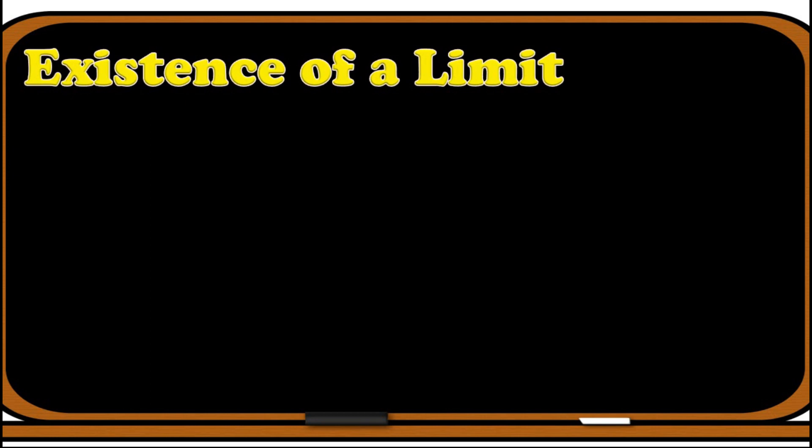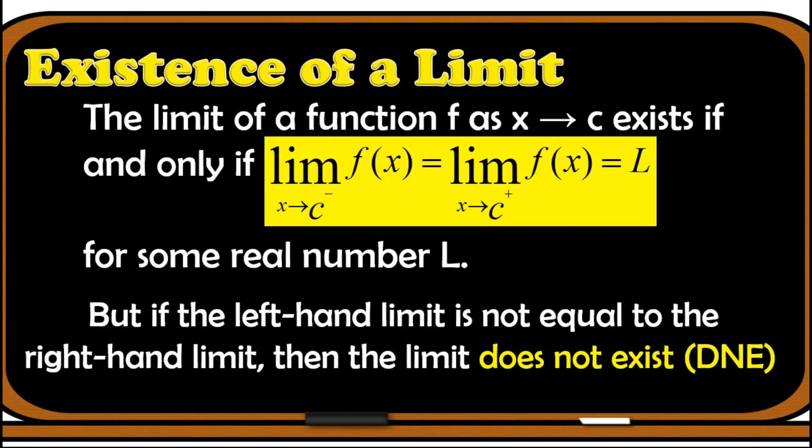Let's talk about the existence of a limit. Does limit always exist? The limit of a function f as x approaches c exists if and only if the left-hand limit is equal to the right-hand limit for some real number L. But if the left-hand limit is not equal to the right-hand limit, then the limit does not exist. Or if one of these does not exist, automatically the limit does not exist as well.